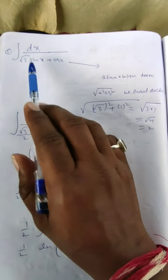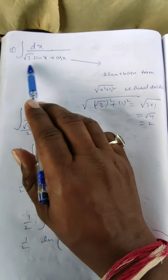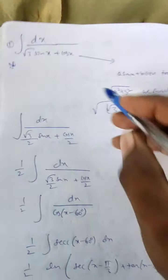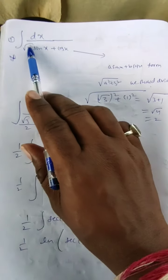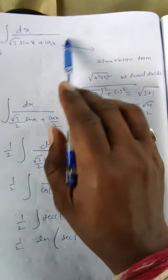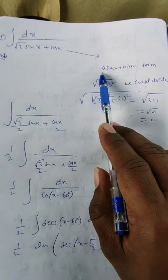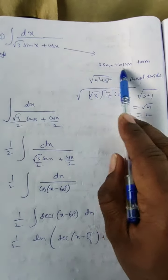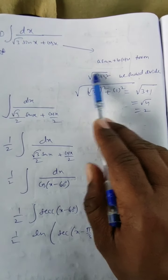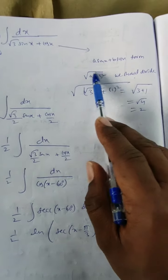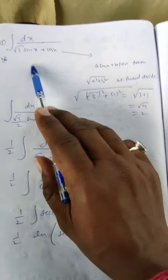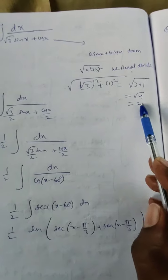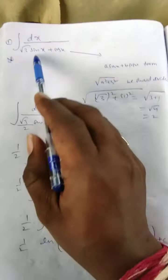Let us discuss integration of dx upon root (3 sin x + cos x). Whenever you have √3 sin x + cos x, these are in the form of a sin x + b cos x. You take the under root of a² + b², which is √(3 + 1) = √4 = 2, and that must be multiplied and divided.